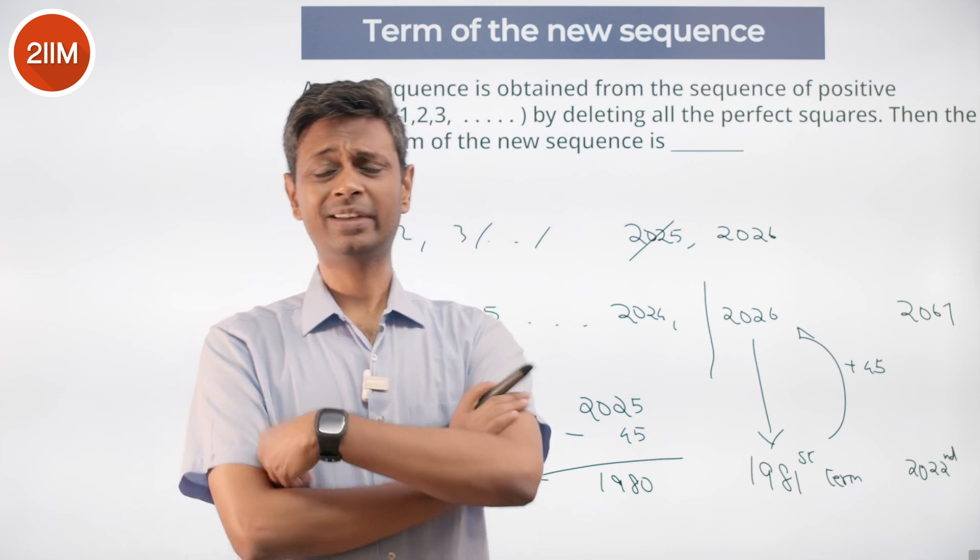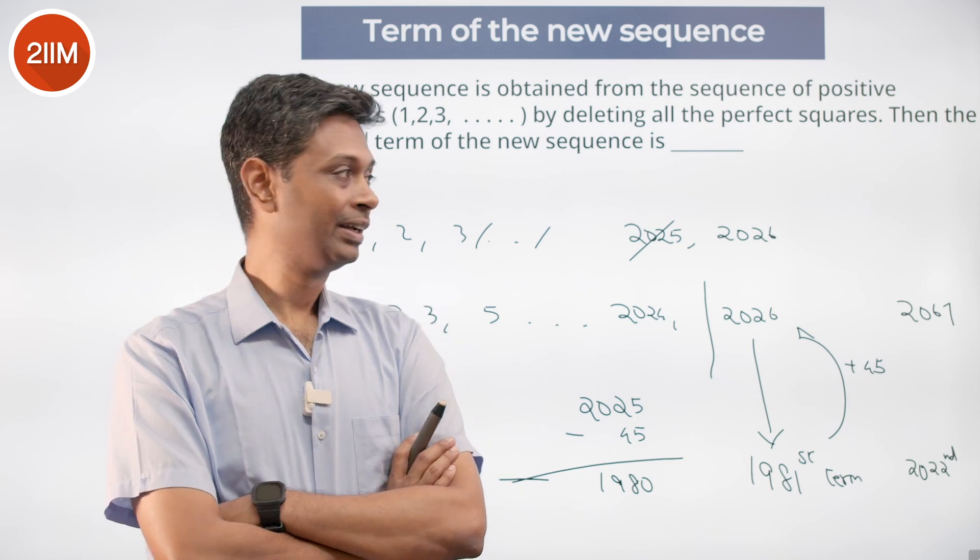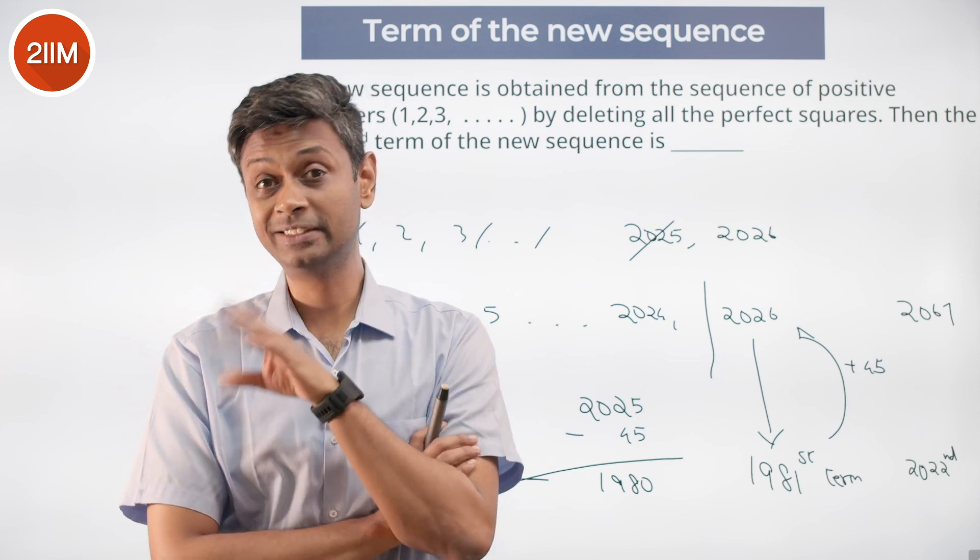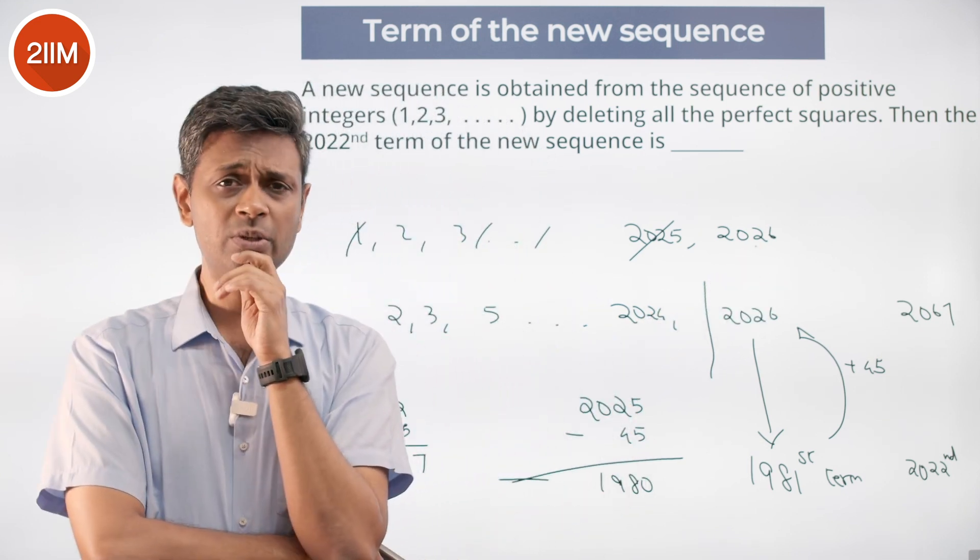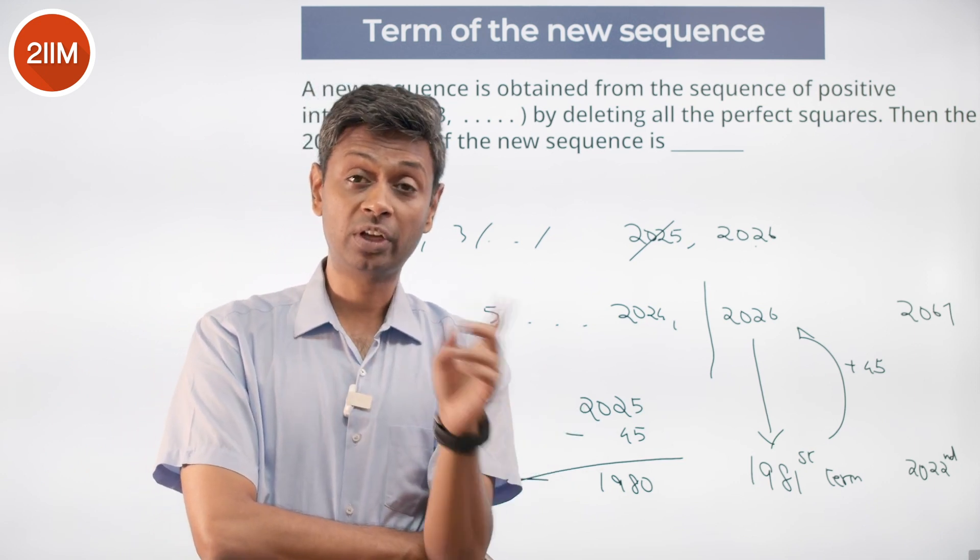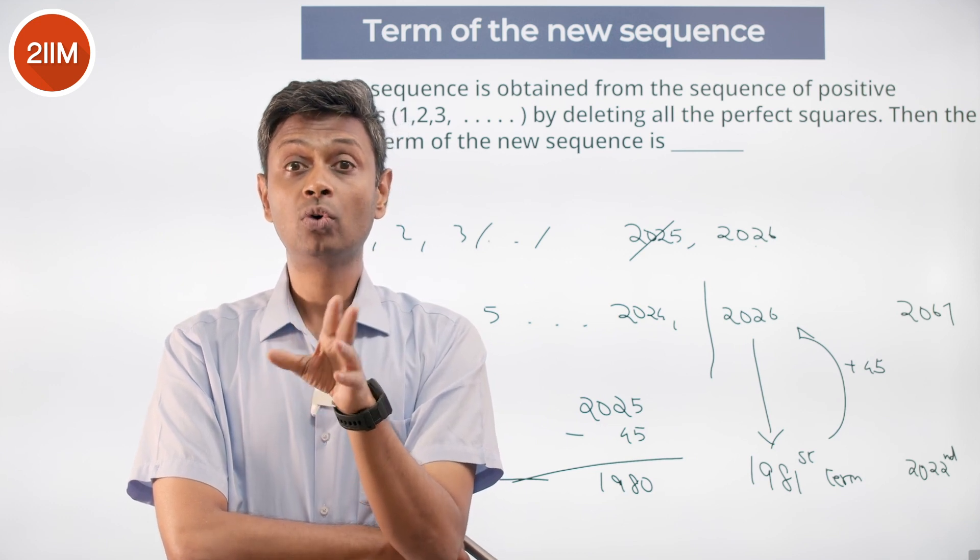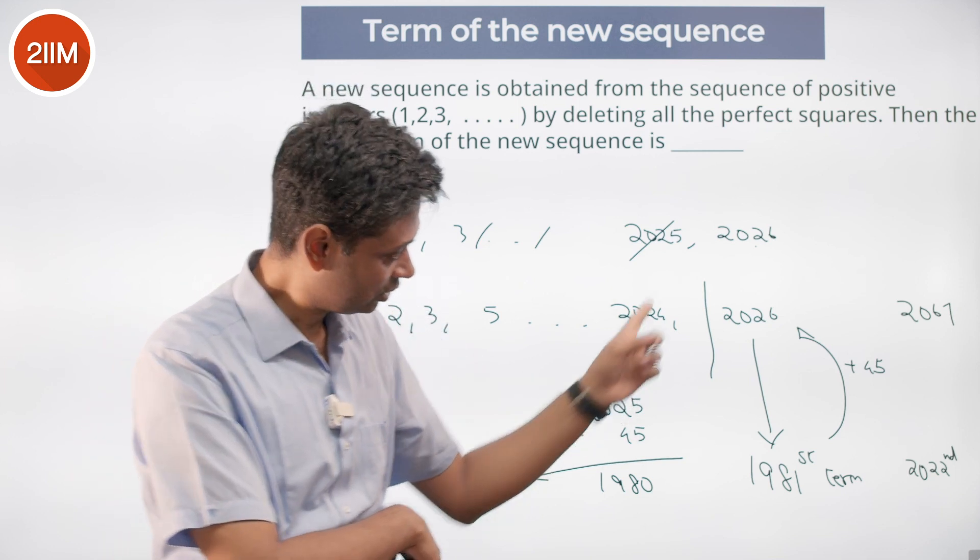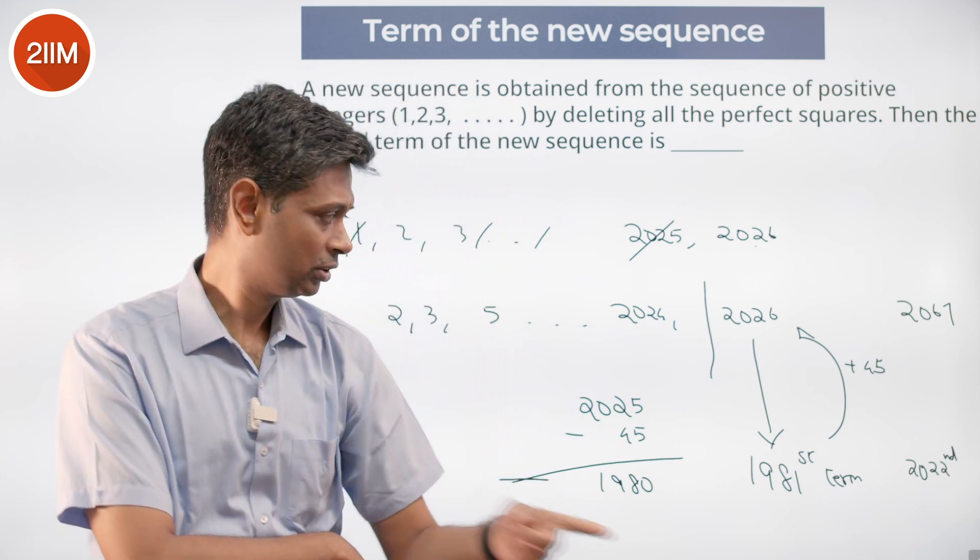I know that squares get knocked off, so finding the nth term is difficult. Finding the rank of n² plus 1 is easy. For 45² plus 1, before this I have picked out 45 numbers. 45² plus 1 will be the (45² plus 1 minus 45)th term. Before that, 45 terms would have got kicked out. That is 1981.